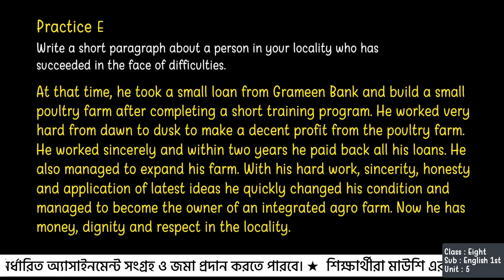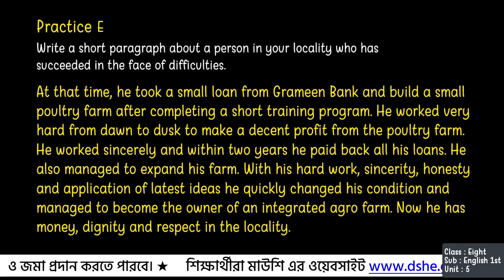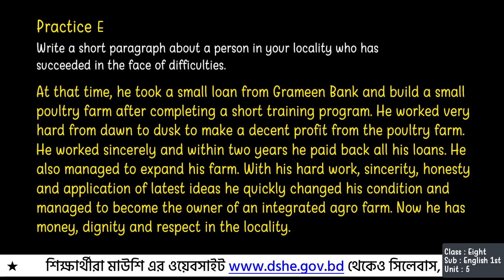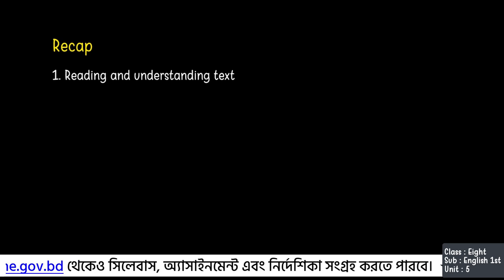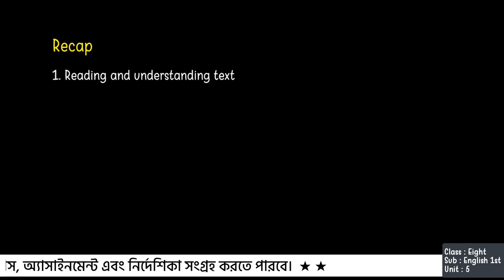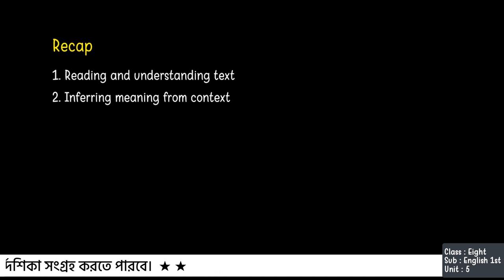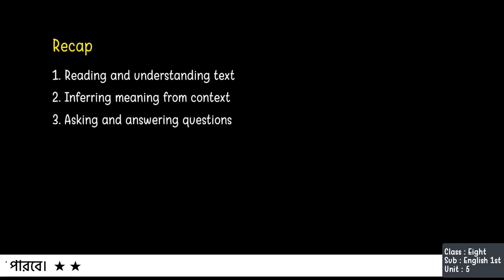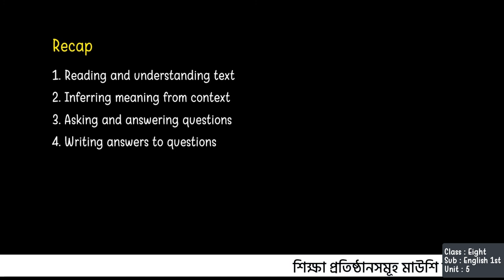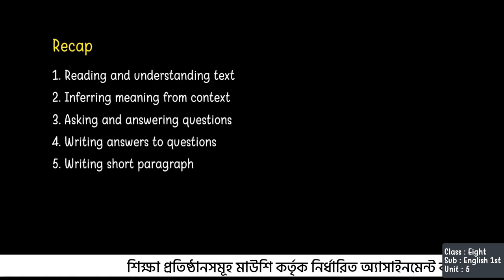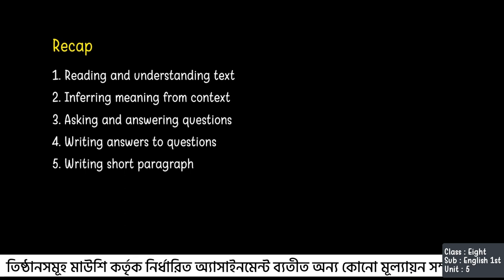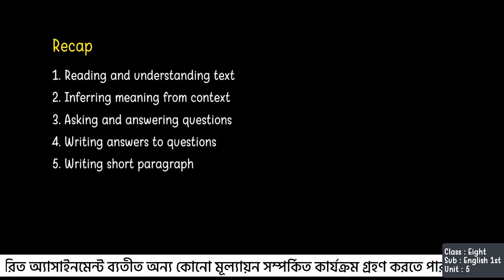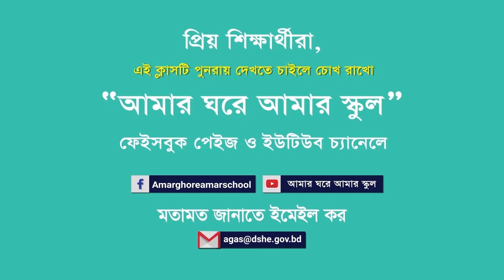Now you can write a similar paragraph about a successful person in your locality. Try practicing that at home. Now let's see what we have learned today. Today we learned: number 1, reading and understanding text; number 2, inferring meaning from context; number 3, asking and answering questions; number 4, writing answers to questions; number 5, writing a short paragraph. Follow the instructions of the government and stay safe. Thank you again from Amar Ghatay Amari School. Follow Facebook and YouTube to see the class again. Thank you very much. Goodbye.